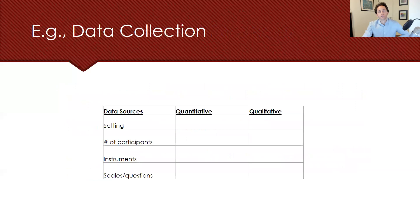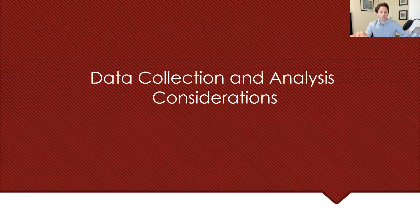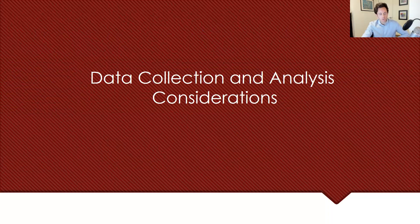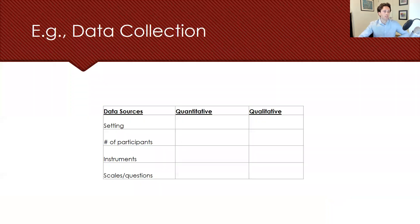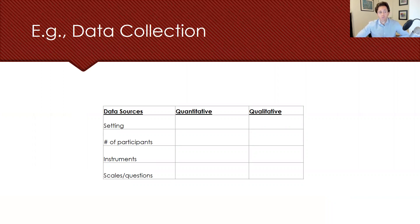We need to slowly go through data collection and analysis considerations. The first is alignment — we need to think about what our data sources are for both the quantitative and qualitative elements. When we think about the setting, are both phases going to occur in the same setting or a different one? Are we going to use the same number of participants — maybe we survey 200 students and then do a focus group with 8 students?